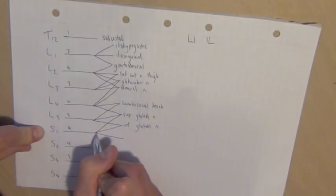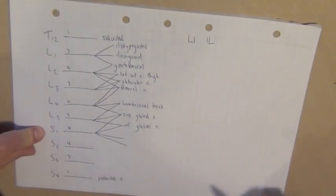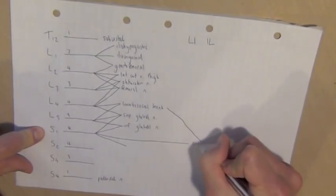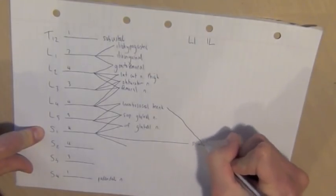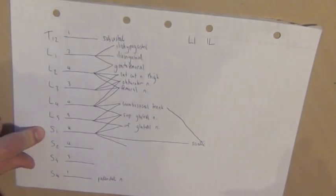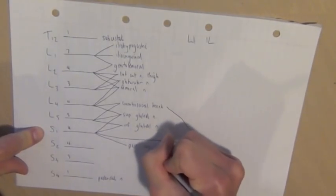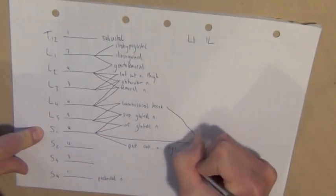One will end up combining with the lumbosacral trunk to become the sciatic, which is a big, awesome functional nerve. And then a not big, awesome functional nerve is the posterior cutaneous nerve of the thigh. Doesn't do a whole lot exciting.